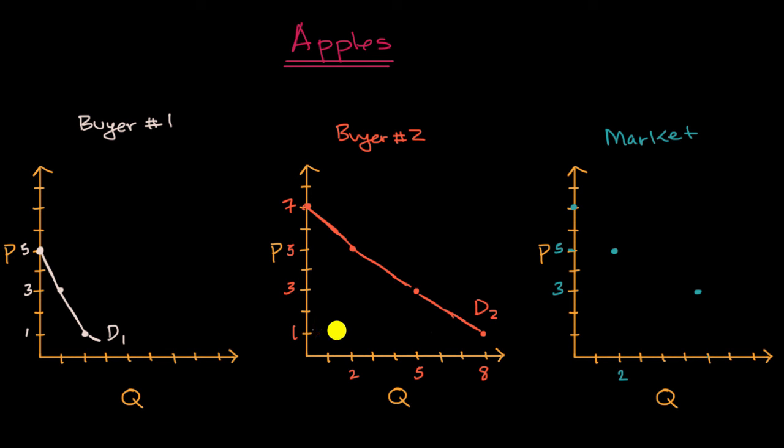And then last but not least, and once again, I'm just sampling these points to make the point to you, that we really would just add, we would take the sum of these two curves, but we're kind of stacking them horizontally as opposed to vertical, because for any given price, we're adding up the quantities. So let's go to one dollar a pound. At one dollar a pound, buyer one is willing to buy two pounds, and at one dollar a pound, buyer two is willing to buy eight pounds. You put those together, two plus eight, you get to ten pounds.